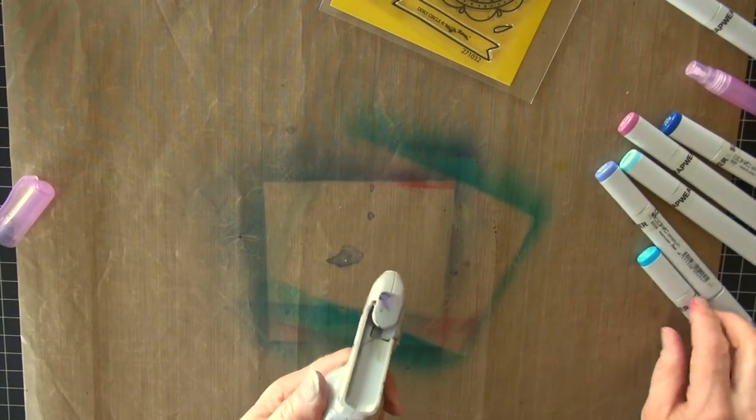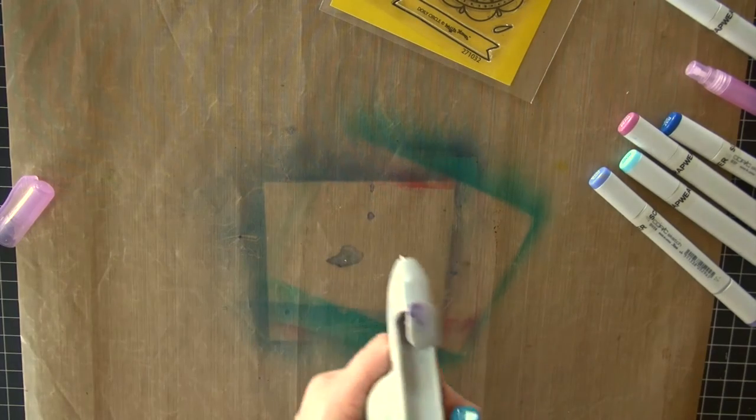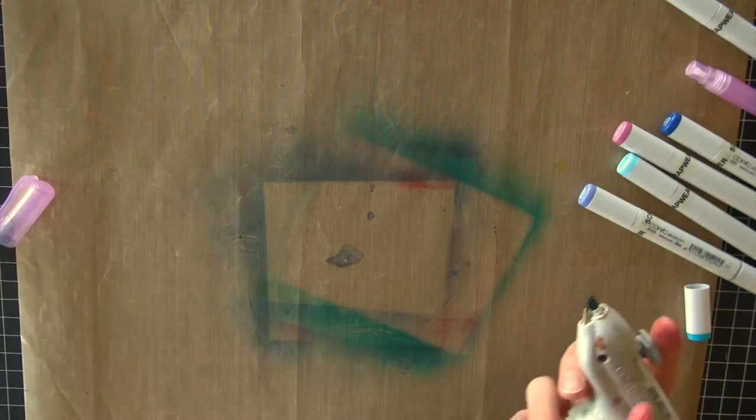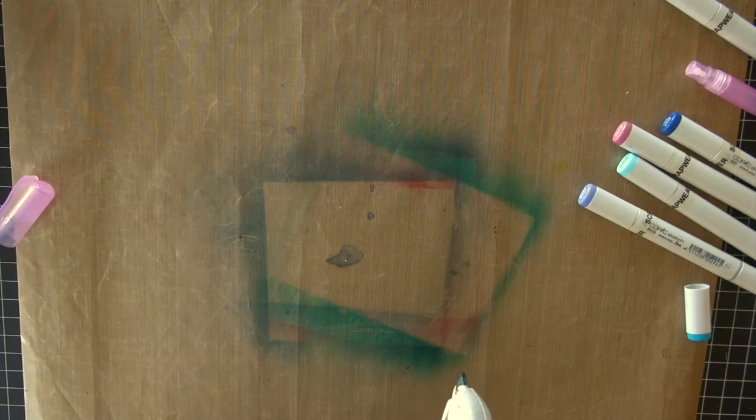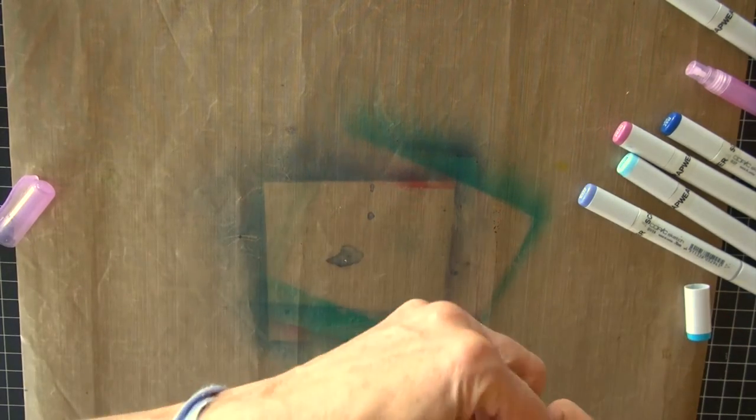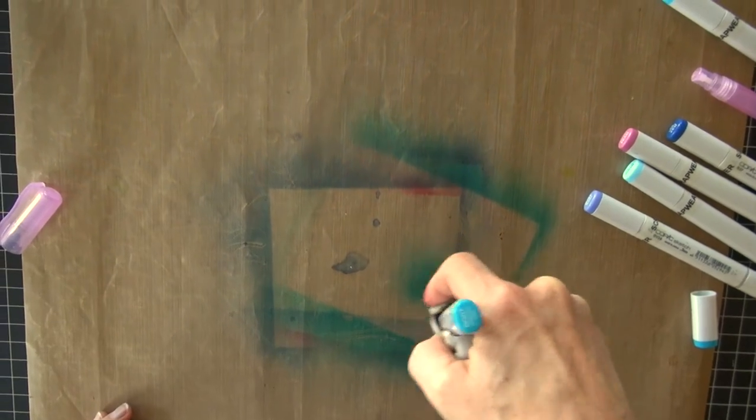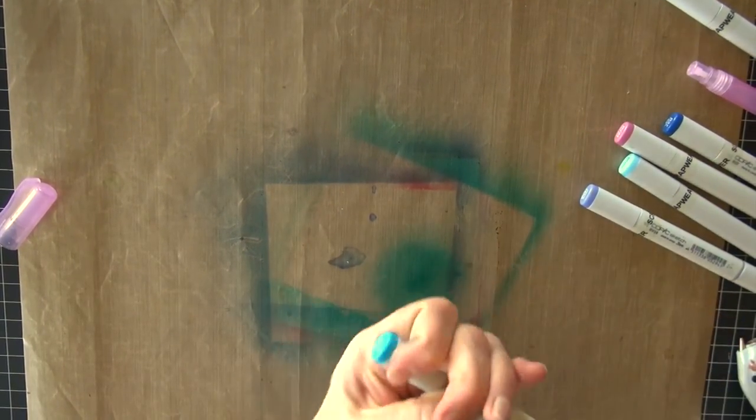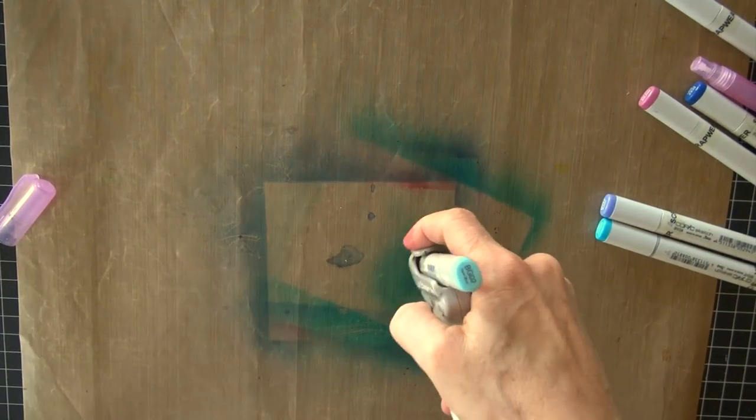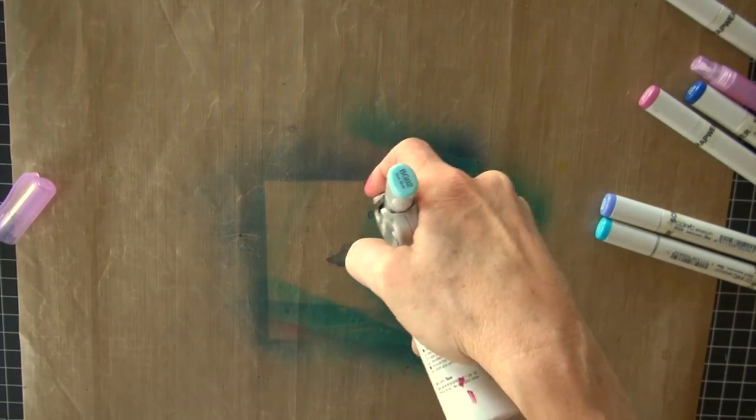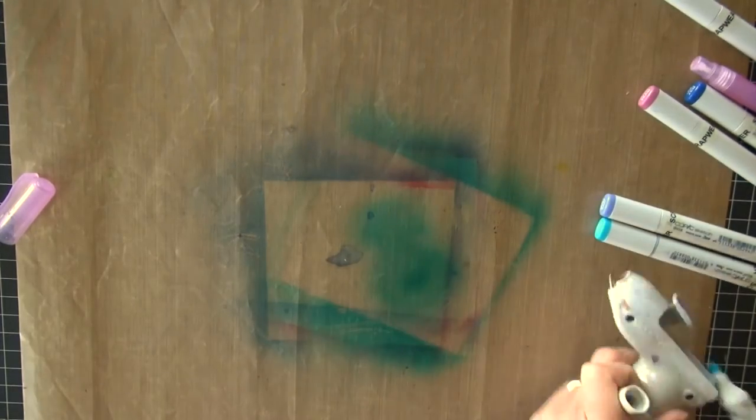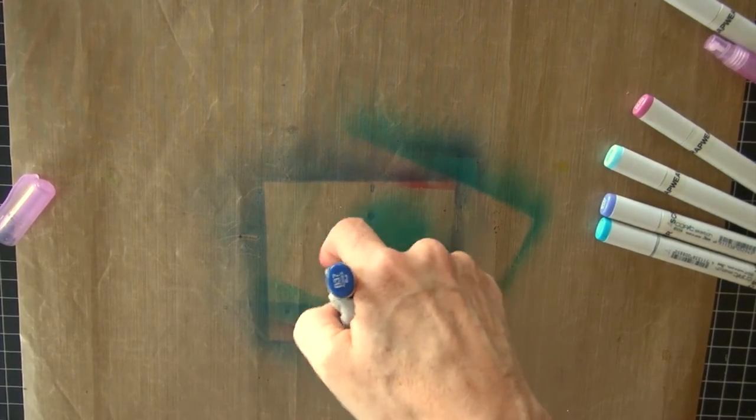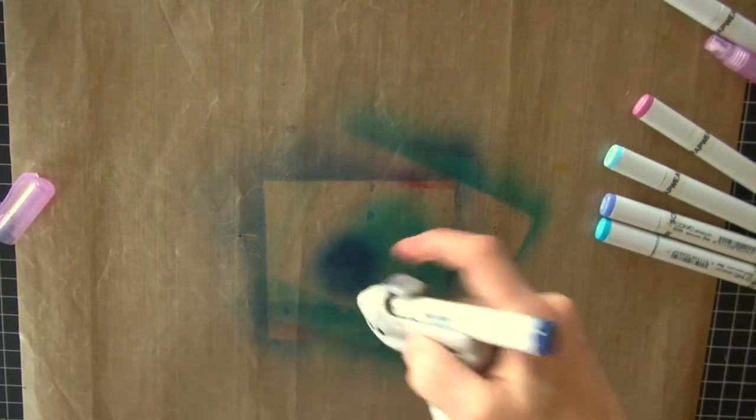I've ended up with a bunch of ink on my mat, and I'm going to exaggerate that. I'm going to add some more, literally on the mat, and we're going to put that on a card too. So all I'm doing is spraying ink directly onto the mat. That was a B04.